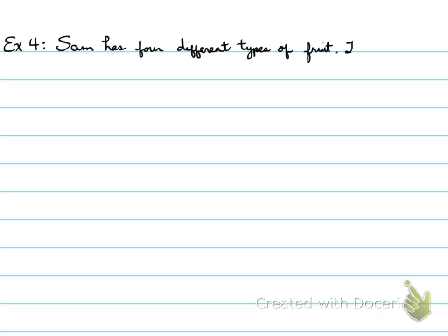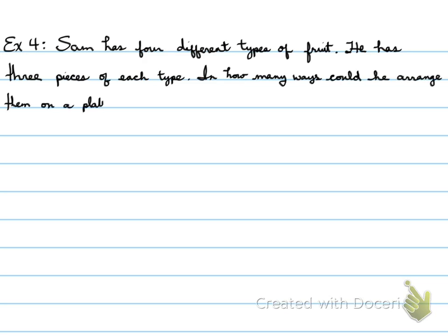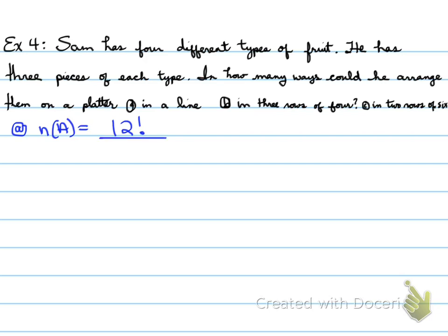Example number 4. Sam has four different types of fruit. He has three pieces of each type. In how many ways could he arrange them on a platter? In a line, in three rows of four, and in two rows of six. So let's look at the first one. In a line means that I'm going to have 12 factorial of pieces of fruit. So four different types, three pieces each.